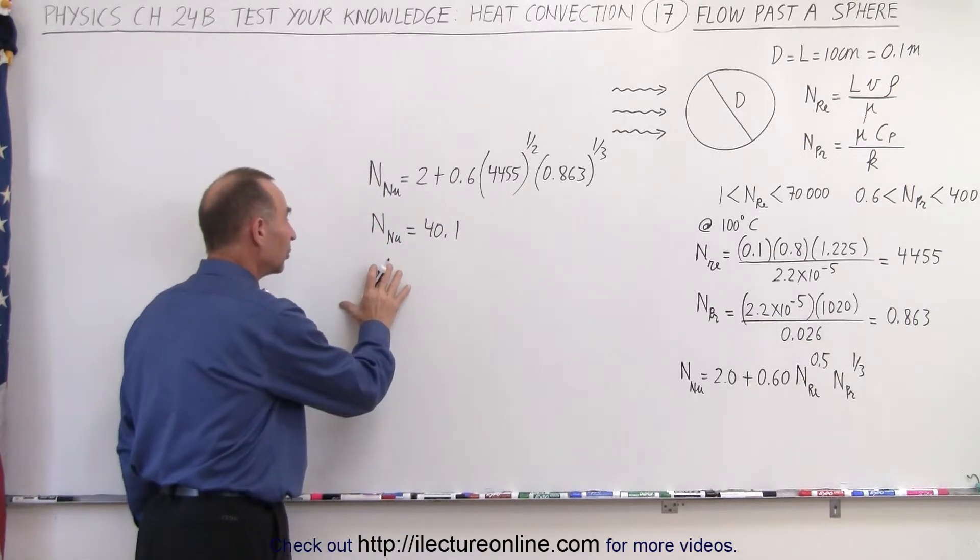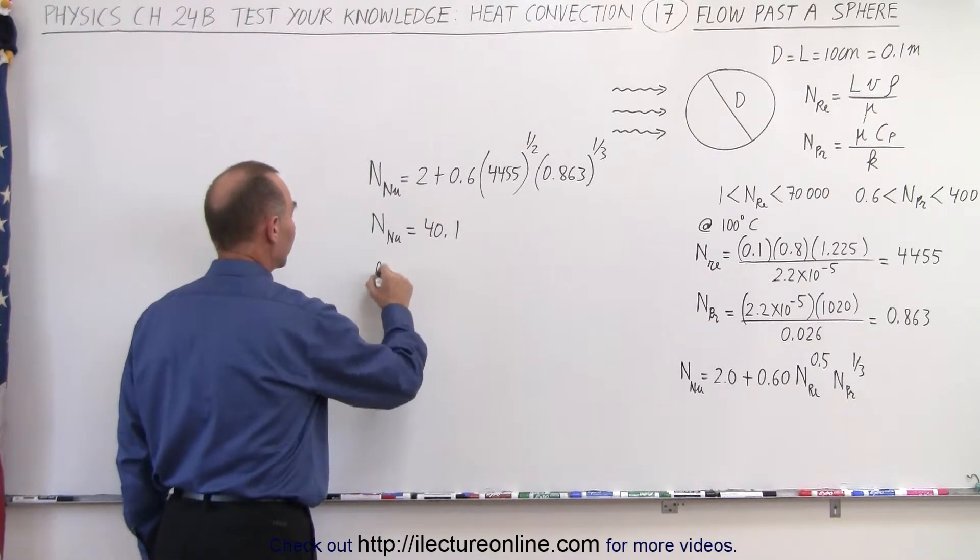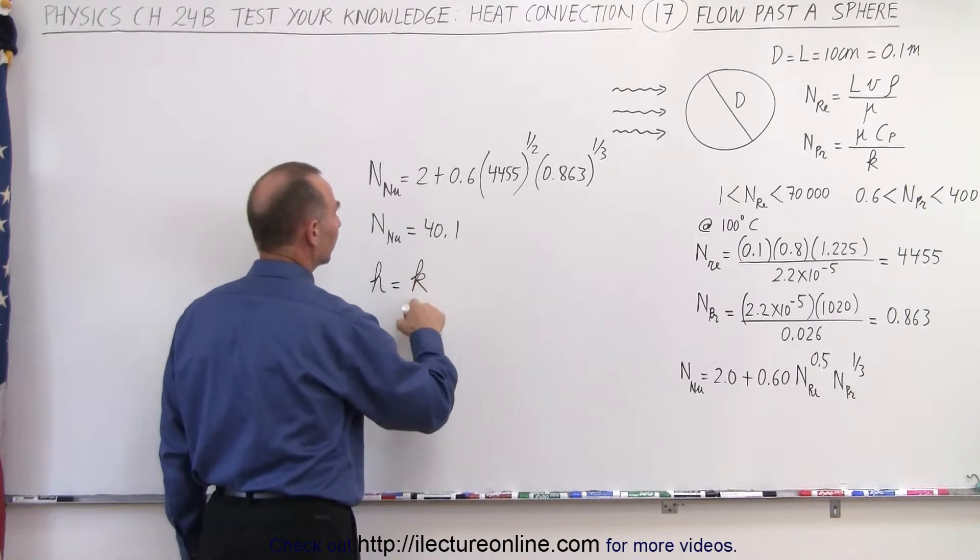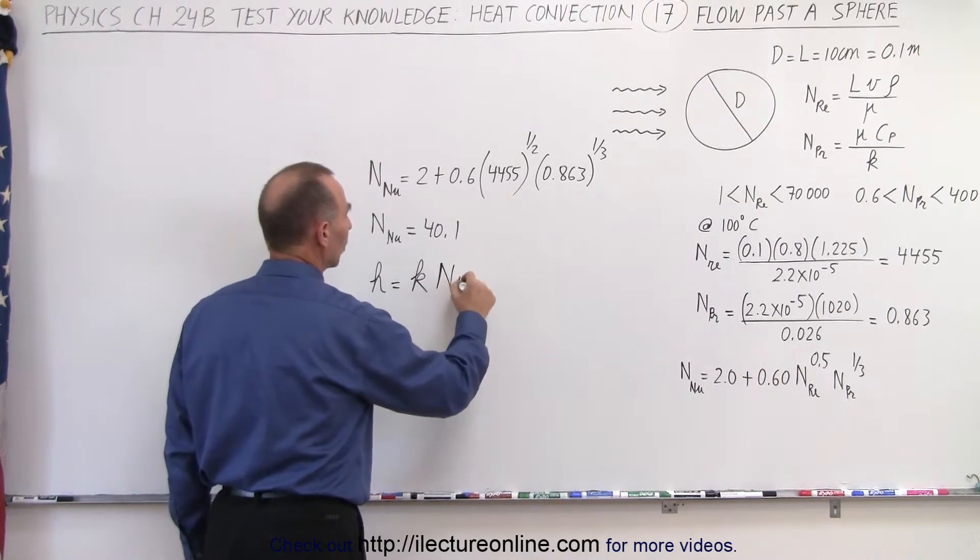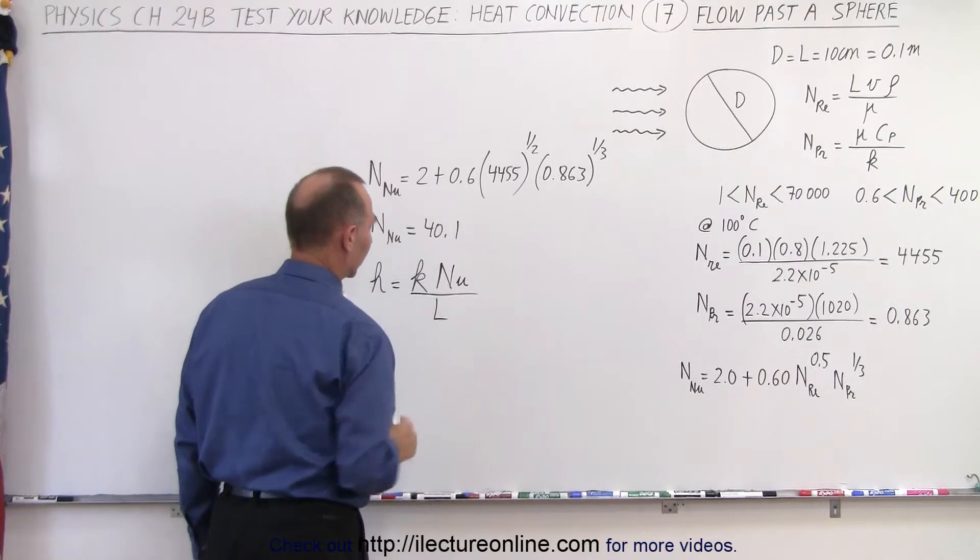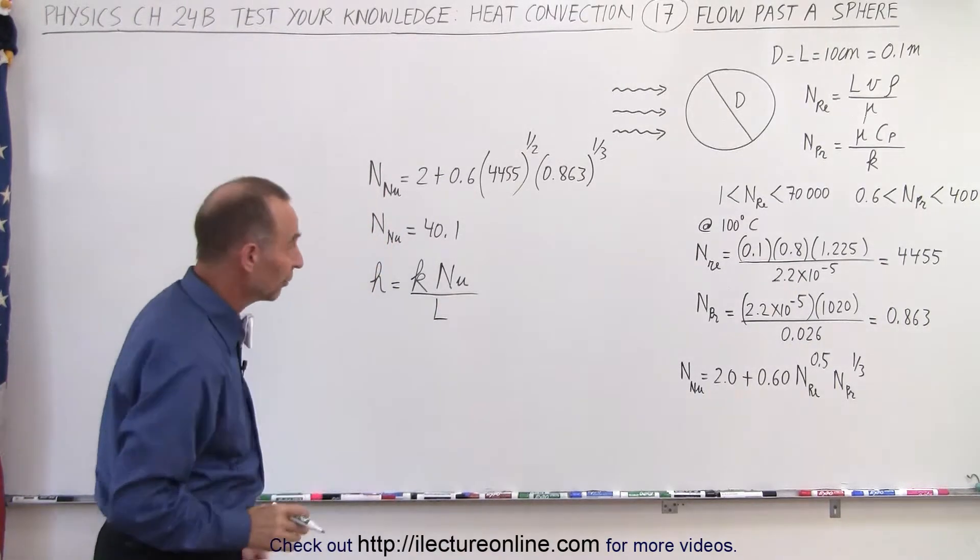So now we're able to calculate a transmission coefficient h, which is equal to the heat conductivity of the air times the Nusselt number divided by the characteristic length. In this case that will be the diameter of the sphere.